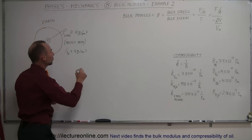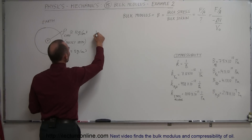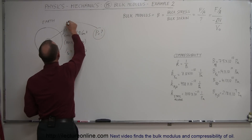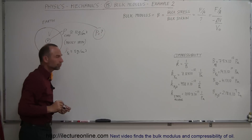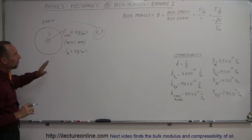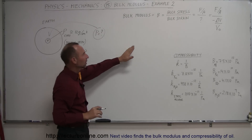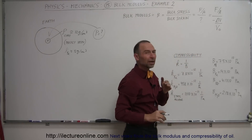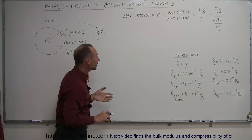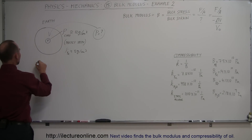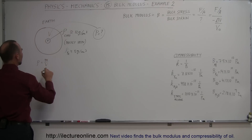So the question now is: what is the pressure at the very center of the core? Since the bulk modulus is defined in terms of pressure and the change in volume, if we have that kind of density change, how did the volume change? The definition of density is mass divided by volume.